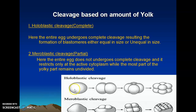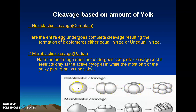Here you can see that this is a holoblastic cleavage. The zygote first divides into two equal cells, then it divides into four cells, then into eight cells. The division is actually complete, meaning it bisects the whole part of the egg. That type of cleavage is called complete or holoblastic cleavage.